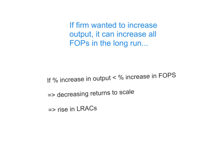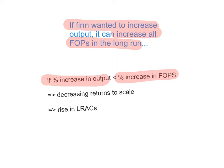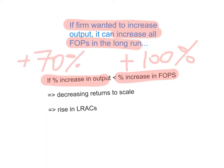Another possible scenario: if the increase in output is less than the increase in factors of production — say inputs increased by 100% but output only increased by 70% — this phenomenon is called decreasing returns to scale, and it leads to a rise in the firm's average cost. This is not a positive phenomenon, because you increased your inputs by a certain percentage and expected your output to at least match that, but it was less. It will lead to a rise in the long run average costs of the firm.